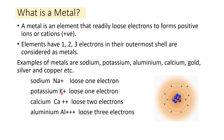Similarly, potassium also loses one electron and becomes one positive charge (K⁺). Calcium loses two electrons and becomes two positive charge (Ca²⁺). The number of electrons an element loses equals the number of positive charges it gains. Aluminium loses three electrons and becomes three positive charge (Al³⁺).